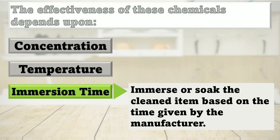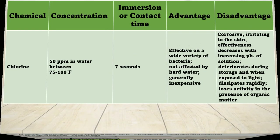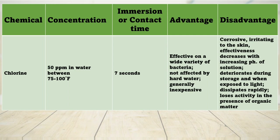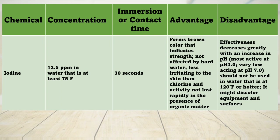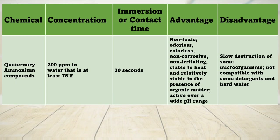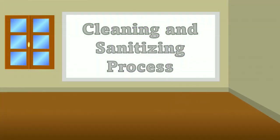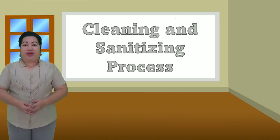To destroy microorganisms, immerse or soak the cleaned item based on the time given by the manufacturer. The table shows the approved chemical sanitizers for use in restaurants for safety purposes. Take note of the concentration, immersion or contact time, advantage, and disadvantage of the following chemicals: chlorine, iodine, and quaternary ammonium compounds. When working in the kitchen, especially during food preparation, cleanliness is a must. It is a standard operational procedure to work with clean hands to avoid any food contamination.